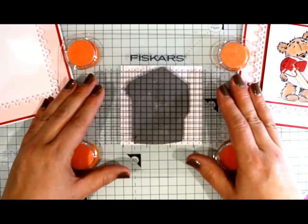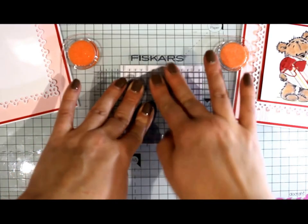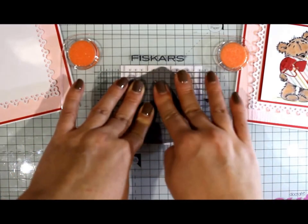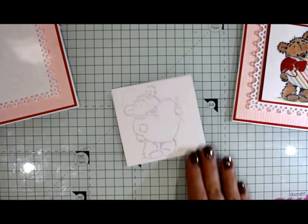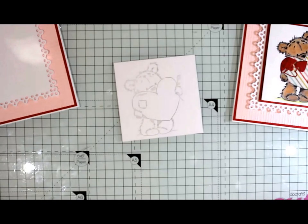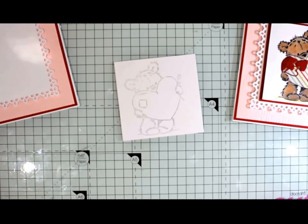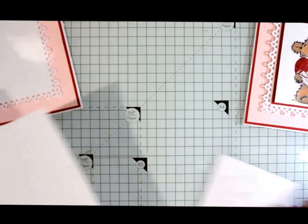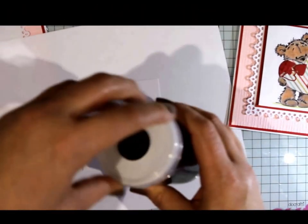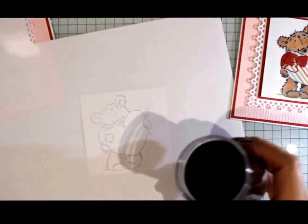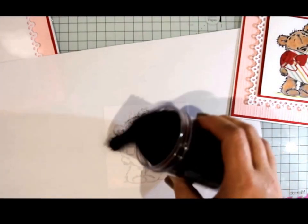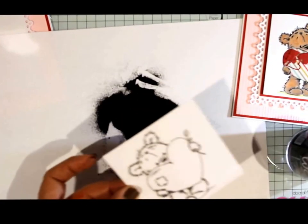I'm going to stamp the bear. We want him slightly towards the left hand side. Give it a good press down. And then we're going to cover that with black embossing powder. Just grabbing a scrap piece of paper. Shake off the excess. Hopefully there's none stuck where you don't want it to be. If there is, just use a dry brush to get rid of any bits that shouldn't be there.